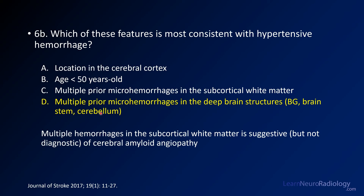The most consistent feature with hypertensive hemorrhage is multiple prior microhemorrhages in the deep brain structures. Patients often have microhemorrhages in those locations, leaving areas of hemosiderosis visible on GRE or susceptibility imaging — consistent with a hypertensive etiology. When microhemorrhages predominate in the subcortical white matter, you need to think about amyloid angiopathy. Of course, these hemorrhages are more common in older patients, and the cortex is not the most common location.